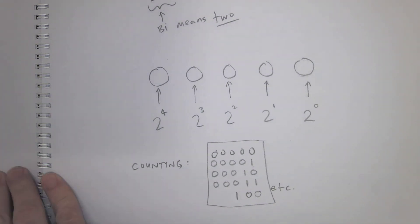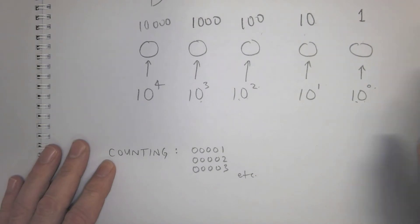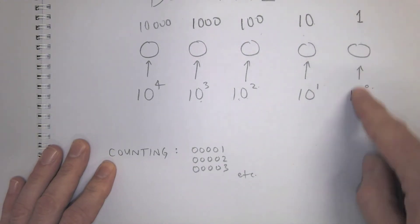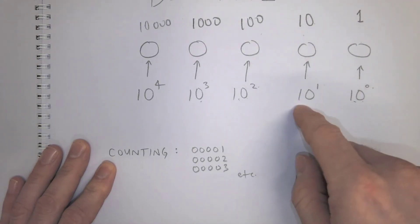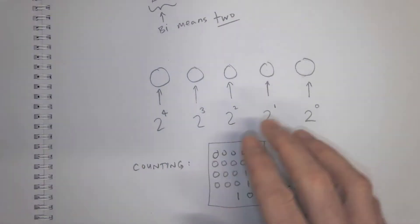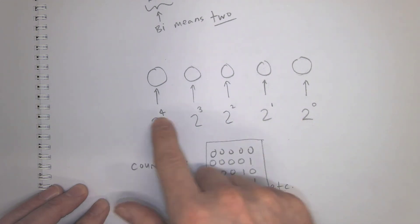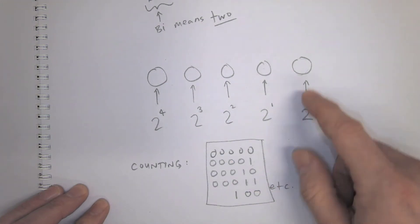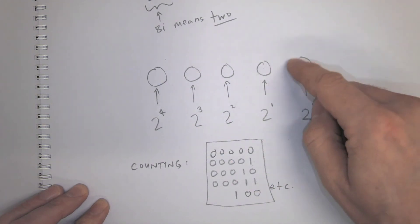And then remember how I was talking about how this first column is 1. It's 10 to the power of 0, 10 to the power of 1, 10 to the power of 2, 10 to the power of 3, 10 to the power of 4. Same thing with binary, except it's 2, the base, right? How many positions this is, 0 and 1, there are two options.